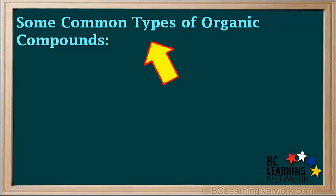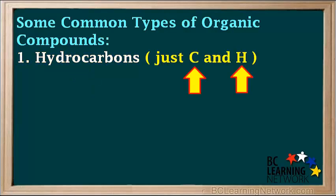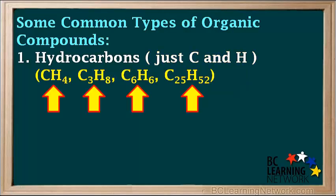One type of organic compound is hydrocarbons. These contain only carbon and hydrogen; for these, C always comes first in the formula. Because a carbon atom has four bonds and can bond to other carbon atoms or to hydrogen, a huge number of hydrocarbon compounds are possible.